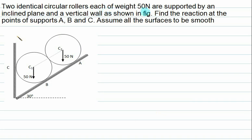Two identical rollers, each of weight 50 Newton, are supported by an inclined plane and a vertical plane. We have to find the reaction at points A, B, and C. We also have contact between the rollers, so there is one more reaction at point D.